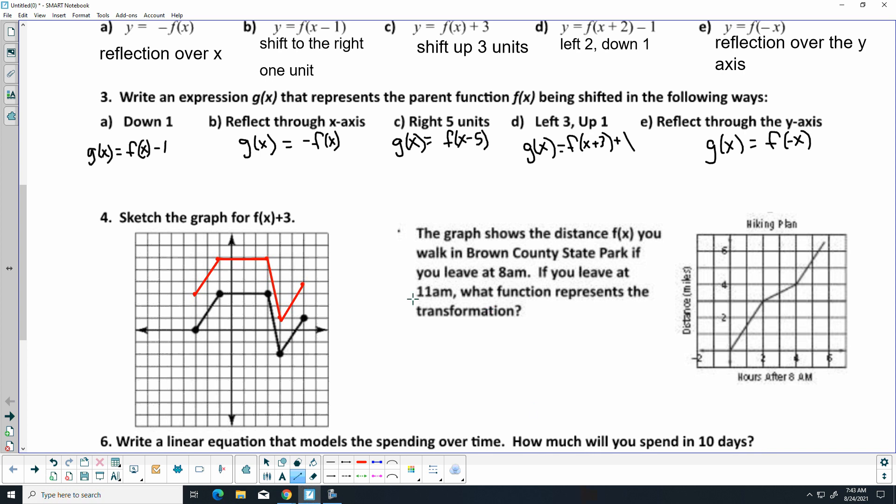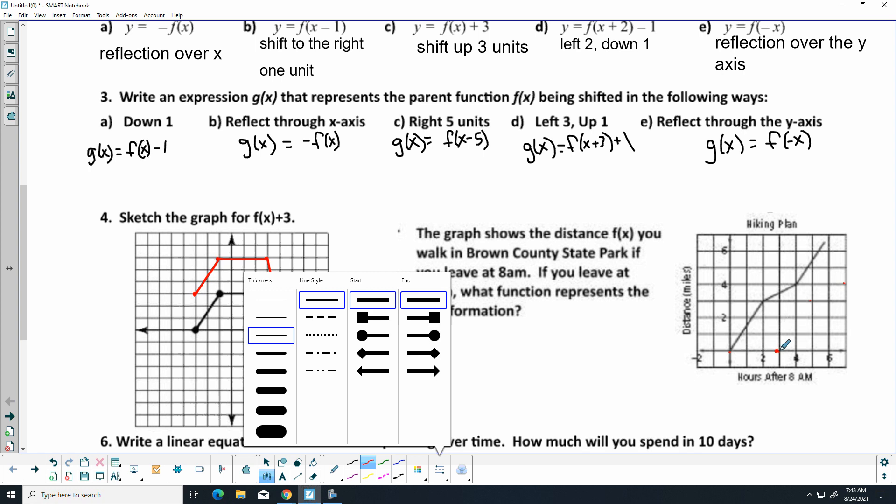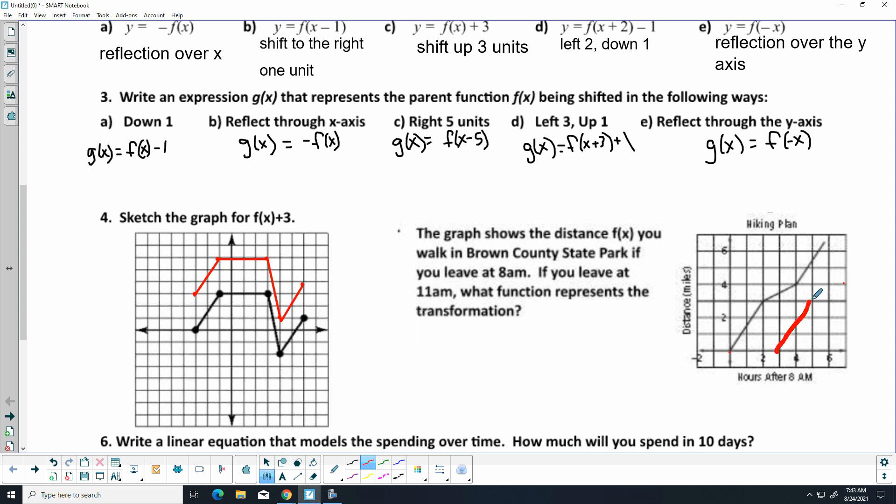All right, the next one, I think that's supposed to be a 5 there. The graph shows the distance, F of X, you walk in Brown County State Park if you leave at 8 a.m. If you leave at 11, what is the transformation going to be? Well, right here is 8. 11 is going to be 3 more hours, so there would be 9, 10, 11. So, that's where I'm starting. Everything is just being shifted to the right 3. It's going to be a little bit off the graph, but we can handle that. All right, I'm going to just freehand this. Bear with me. All right, not the best drawing, but you get the idea.